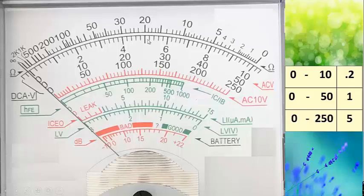Continuing: 5.2, 5.4, 5.6, 5.8, then 6, 6.2, 6.4, 6.6, 6.8, 7, 7.2, 7.4, 7.6, 7.8, then 8, 8.2, 8.4, 8.6, 8.8, then 9, 9.2, 9.4, 9.6, 9.8, 10. So therefore, for the 0-10 scale, the equivalent per graduation is 0.2.